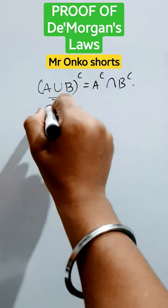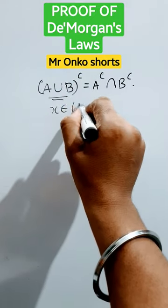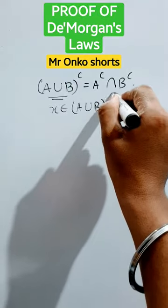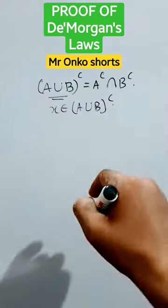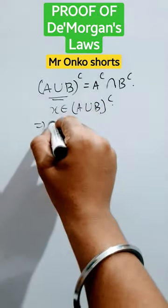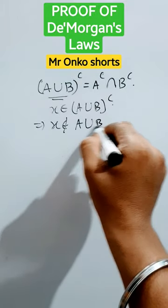So first of all, let X belongs to A union B whole complement. Now this simply means that X doesn't belong to A union B.